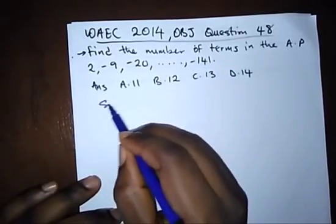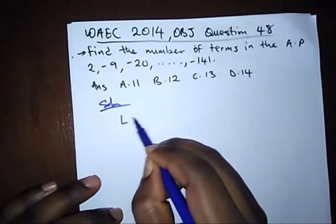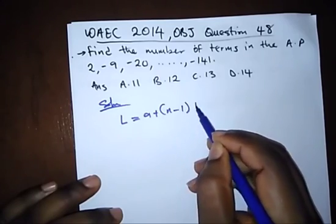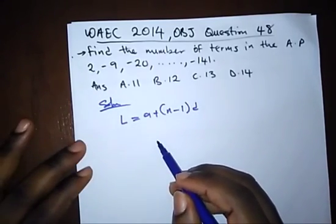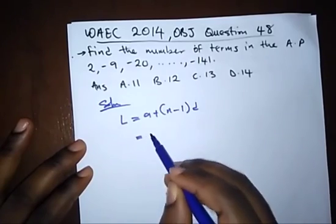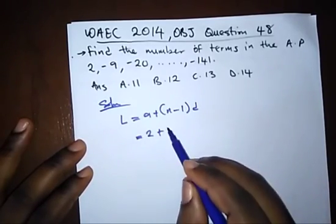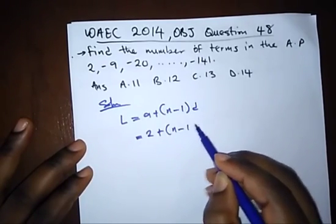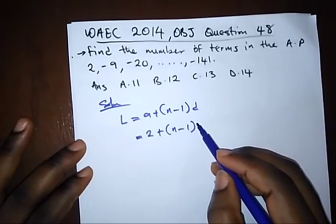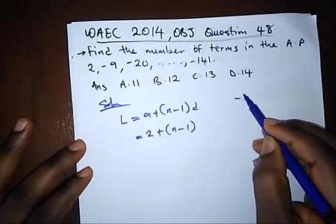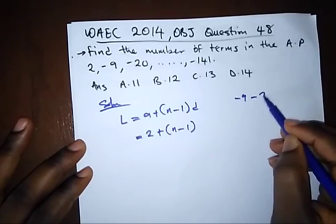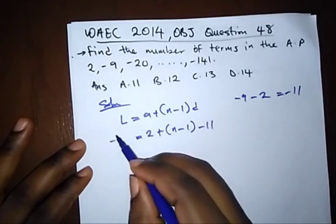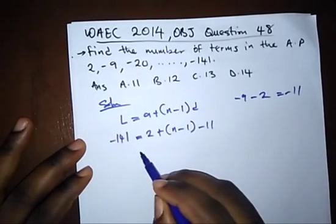Since we have a last term, we shall use the formula: l = a + (n-1)d. Our first term is 2, we are looking for n — the number of terms. Our common difference is -11, that is -9 minus 2 equals -11. Our last term is -141.